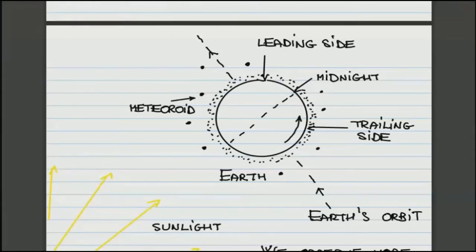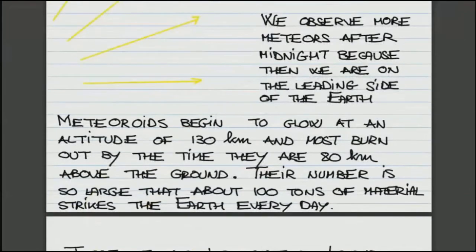It turns out that they start to burn at about 130 kilometers above the ground. And most of them, those small, really small ones, they don't have enough material to sustain them so that they can reach the surface of the Earth. So most of the meteoroids burn out by about 80 kilometers above the ground.